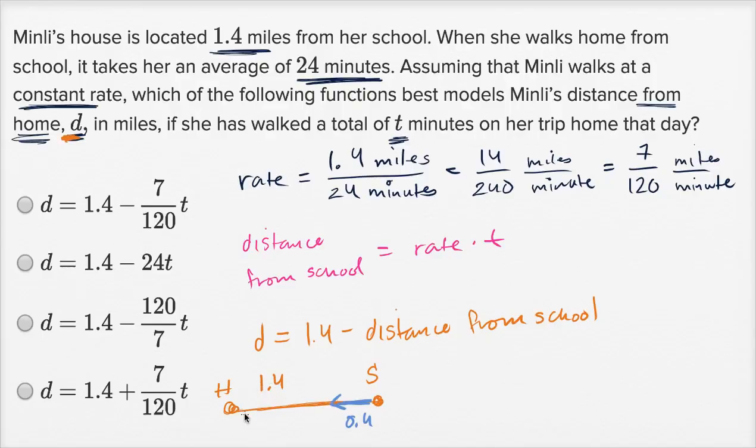then her distance from home is going to be 1.4 miles minus that. It's going to be this distance right over here. So, distance from home is going to be 1.4 minus the distance from school. And what's that going to be? Well, that's just going to be 1.4 minus the rate times the time. Well, what's the rate? 7 over 120 miles per minute. We got the units right. And so, this D is going to be equal to 1.4 minus 7 over 120 t.